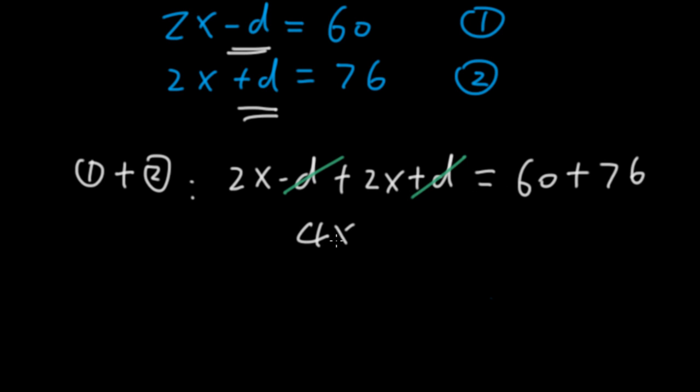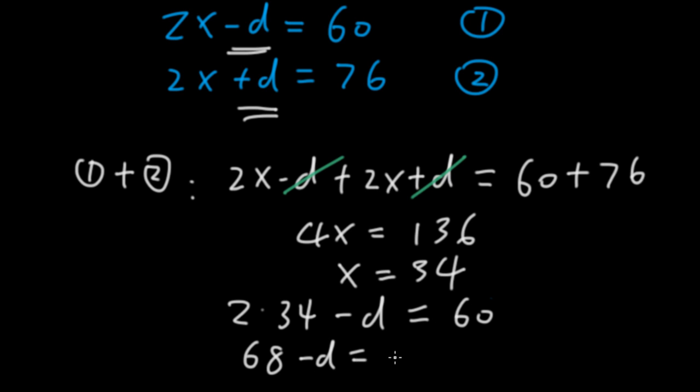Now minus D and plus D cancels out. We have 4x equals 136 and x equals 34. If x is equal to 34, we sub it back to equation 1. 2 times 34 minus D equals 60. 68 minus D equals 60. So we have D equals 8.